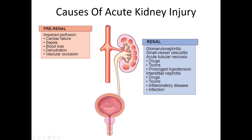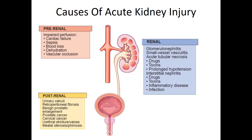Then there are intrinsic renal problems — an actual problem with the glomerulus: maybe it's infected, maybe there are problems with the vessels, or the glomerulus is clogged due to drugs, toxins, inflammation, or infection. There are also problems after urine leaves the kidney — issues with the ureteral system, such as a kidney stone. If urine backs up into the kidney and causes too much pressure, it can cause kidney damage, as can fibrosis, chronic urinary retention, or different types of cancers. So one of the first questions we ask is: is the problem before the kidney, in the kidney, or after the kidney?